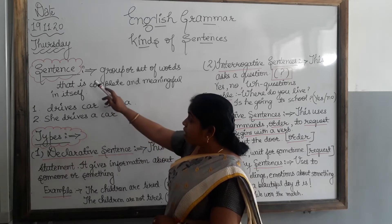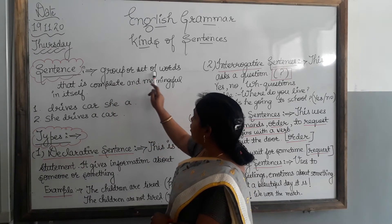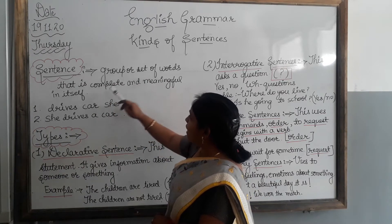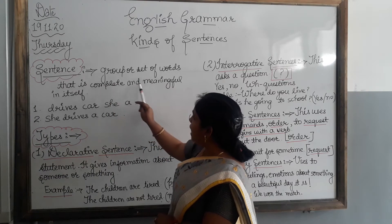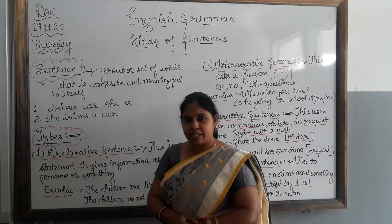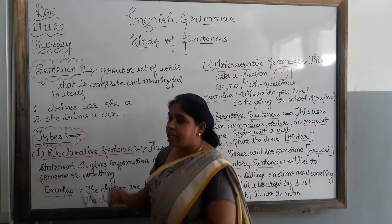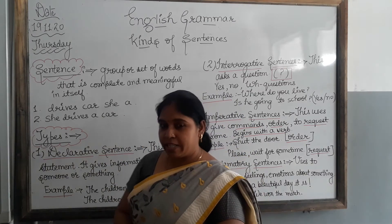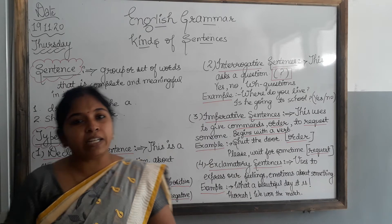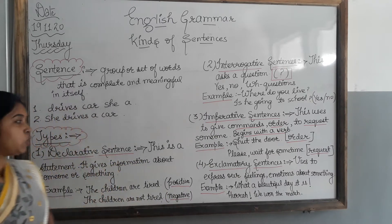So, a sentence is a group or set of words that is complete and meaningful in itself. Now after this we will discuss the types of sentences. The first one is the declarative sentence.